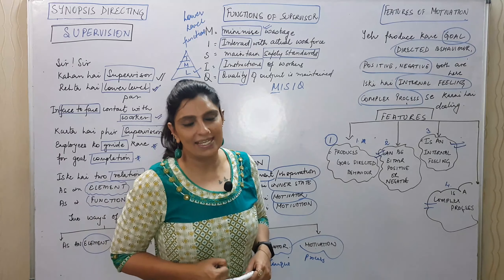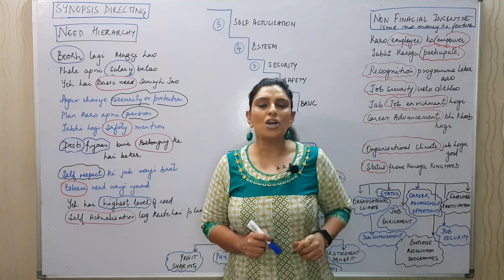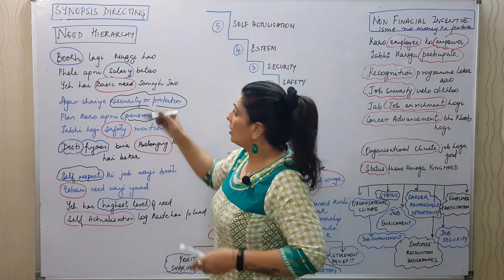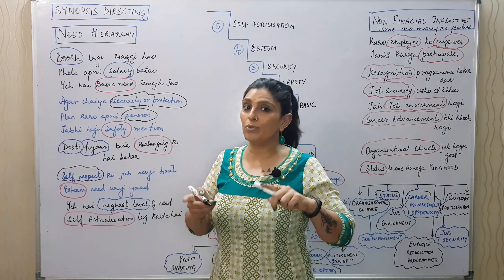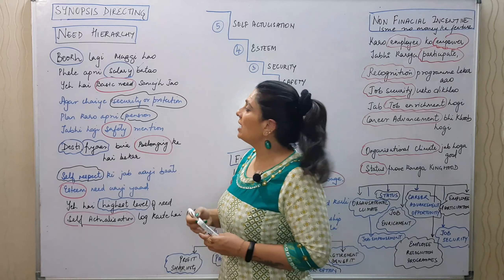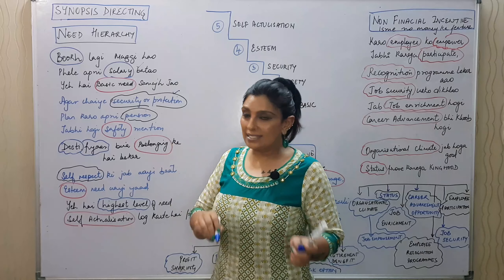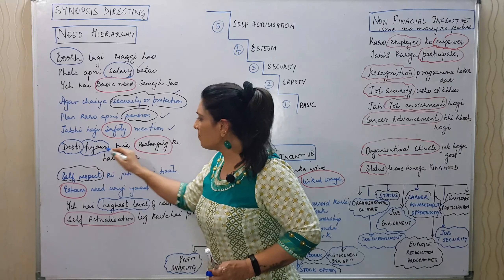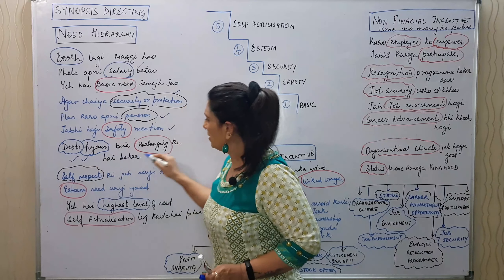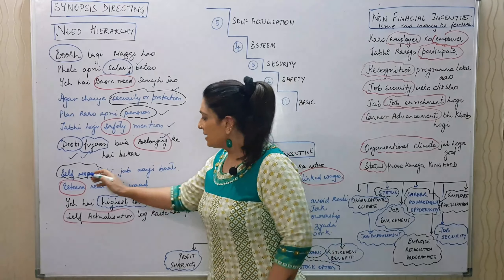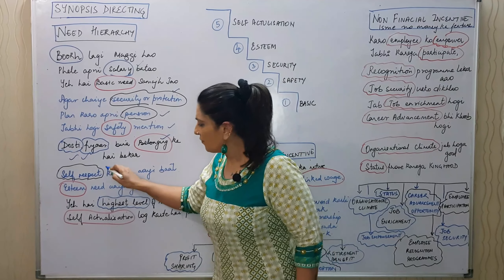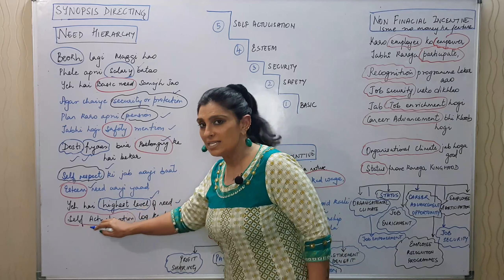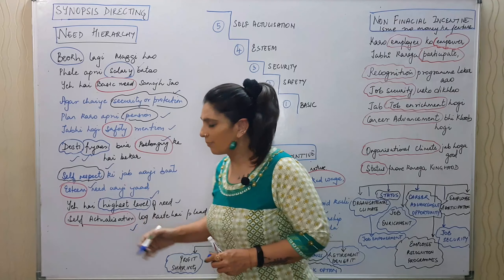Next we start with Maslow's Need Hierarchy Theory of Motivation by Abraham H. Maslow. The first is the basic need — from the organizational point of view, this is your salary. Next is the safety need — for example, plan your pension for safety and security. Then social/affiliation need — belonging; friendship and love, without belonging it has no value. Then esteem need — self-respect. And the highest level is self-actualization. The diagrammatic representation goes: basic, safety/security, esteem, and self-actualization.